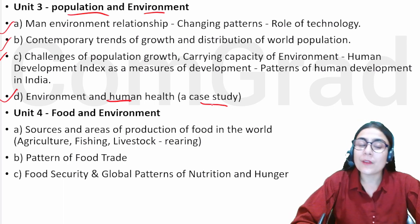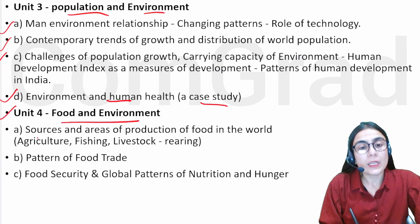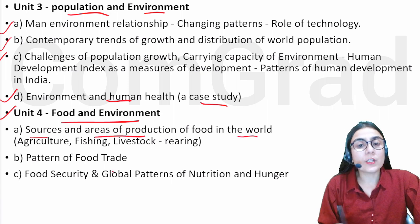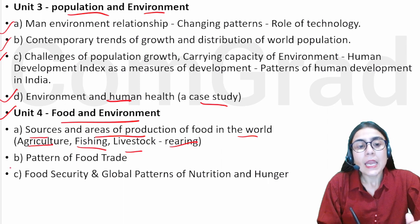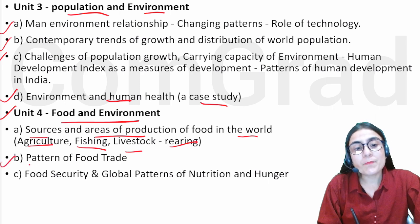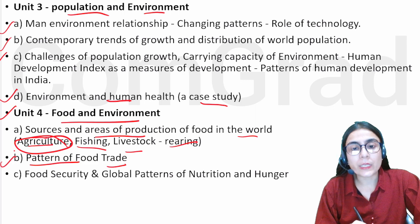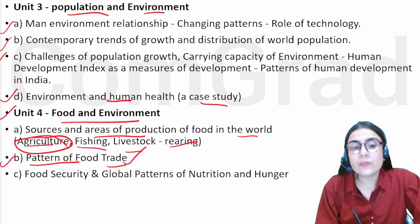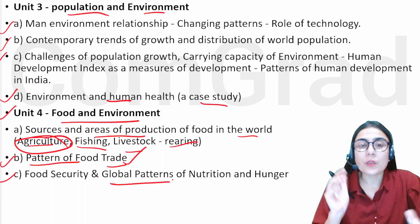The fourth unit is food and environment. In the environment — food: what are the sources, what are the areas of production, what are the foods in the whole world? Like agriculture, fishing, livestock rearing. And the next is pattern of food trade. Food security is a global pattern of nutrition. We will study all this in the fourth unit.